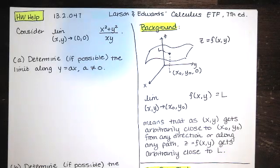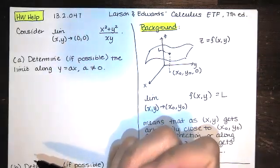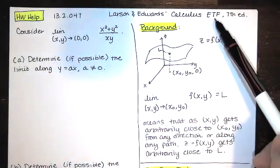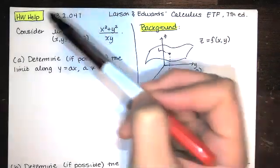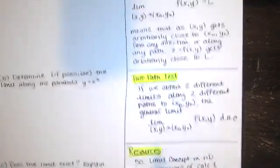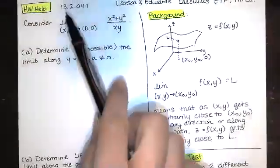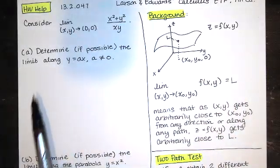This video is about a homework problem one of my students asked me about. It is problem 13.2.047 in the Larson and Edwards Calculus Early Transcendental Functions textbook, 7th edition. Before we solve this problem, I want to give you some background. I want to talk about the two-path test and then some other resources related to evaluating this limit. So let's read the problem, then focus on the background, and then go and solve the problem.